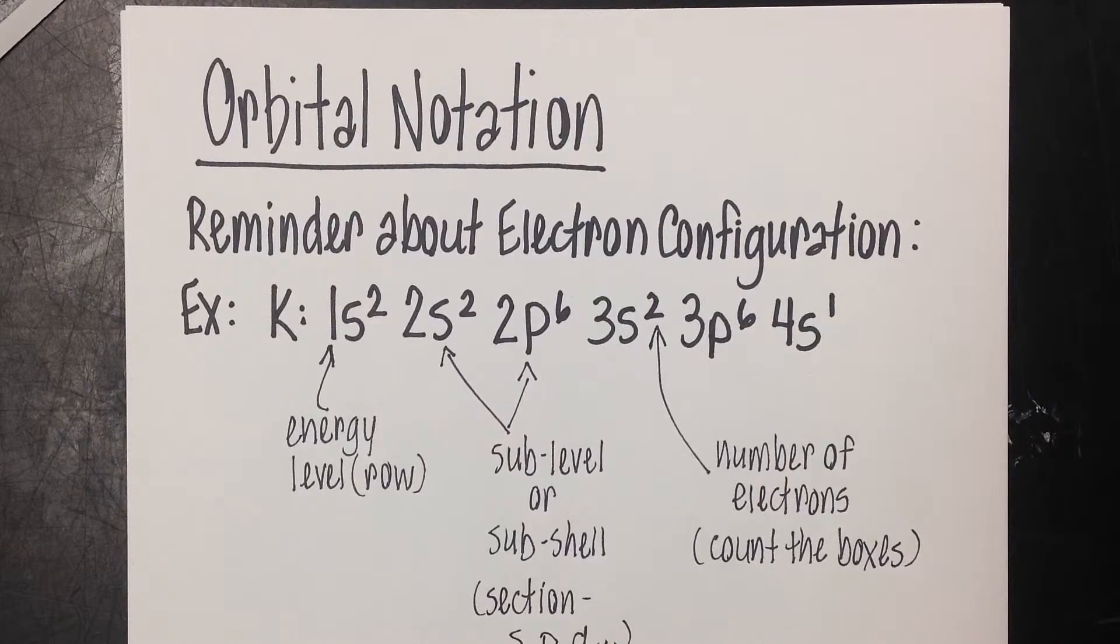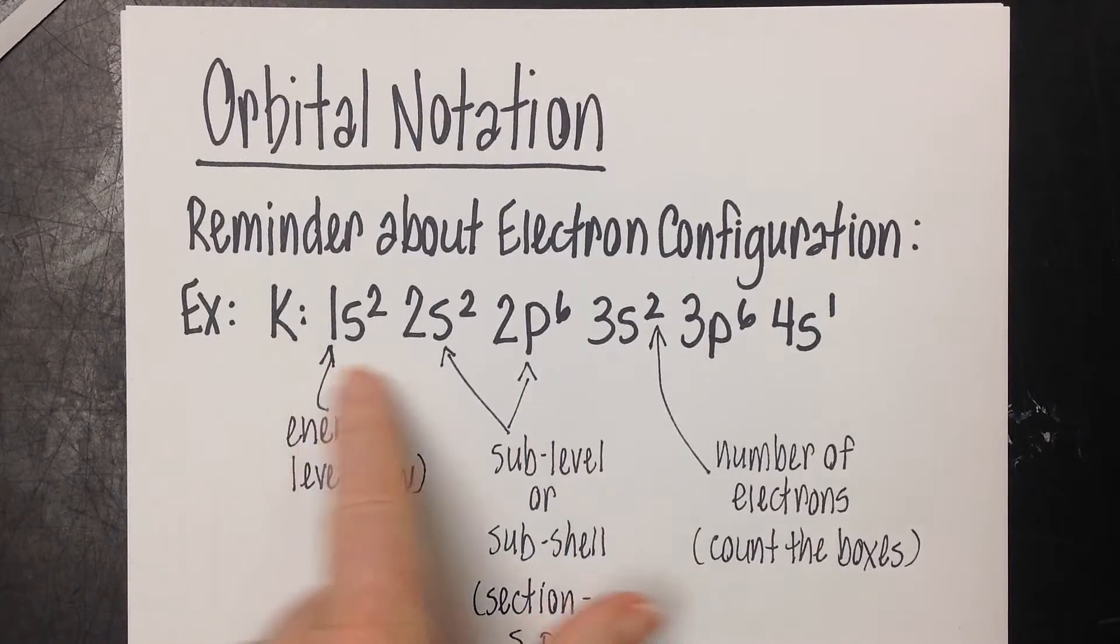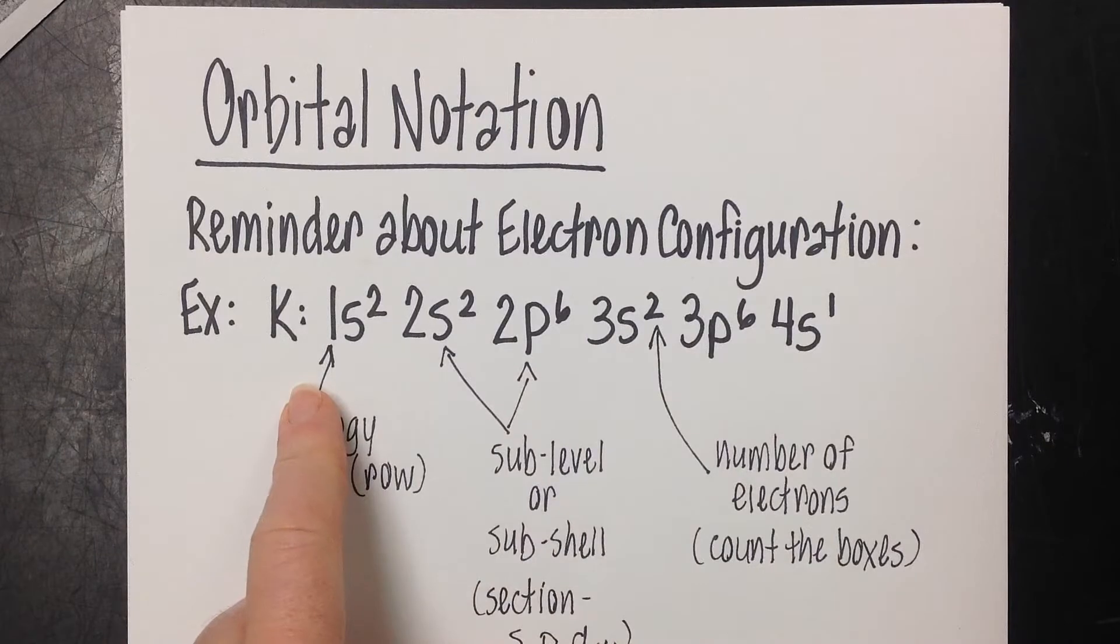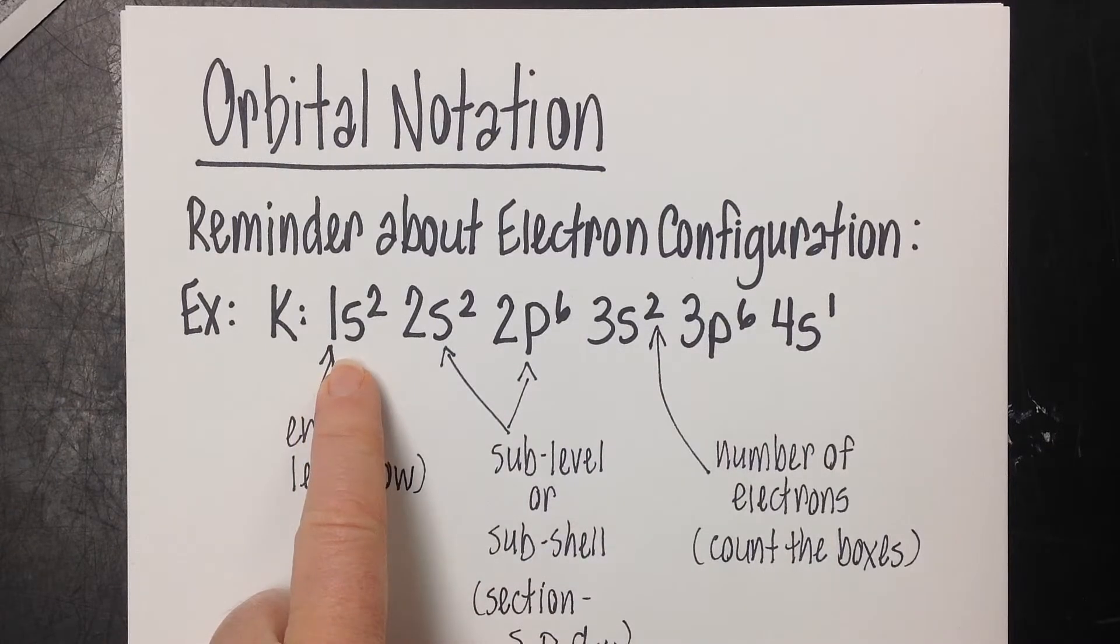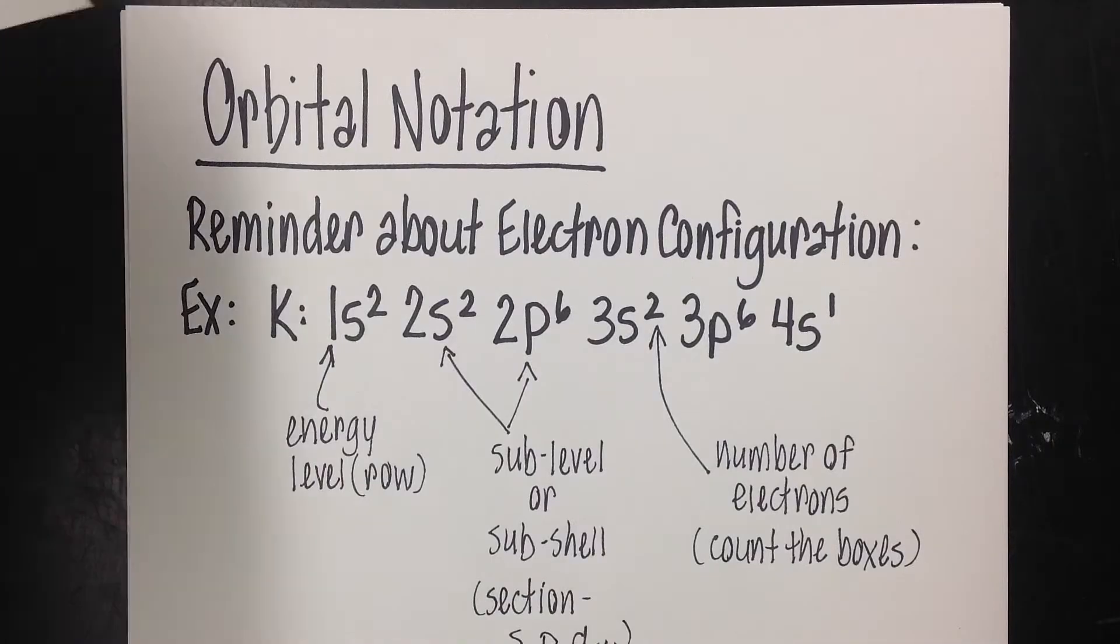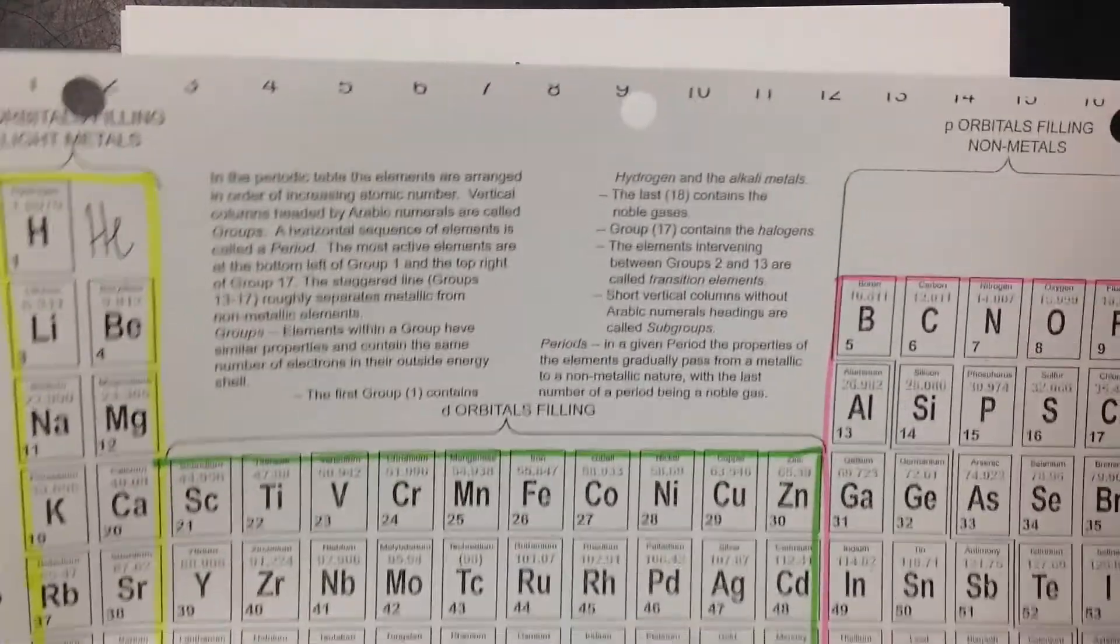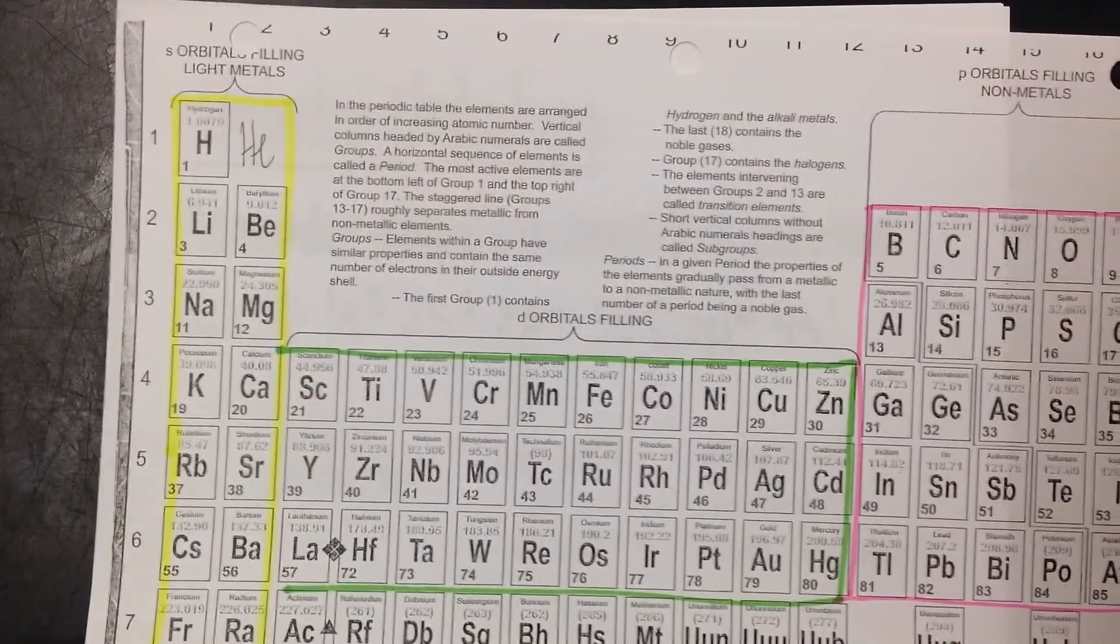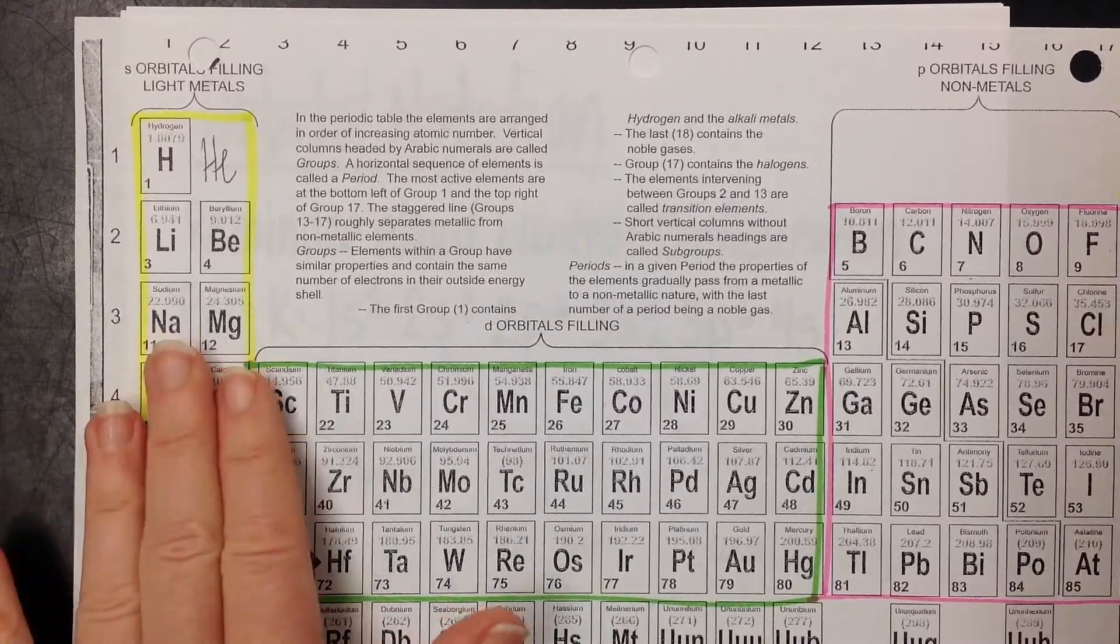So a quick reminder about electron configuration. Here's an example of the electron configuration for potassium. Potassium is 1s2, 2s2, 2p6, 3s2, 3p6, 4s1. And I got that information from the periodic table.